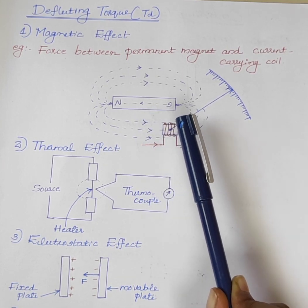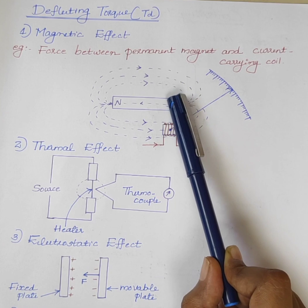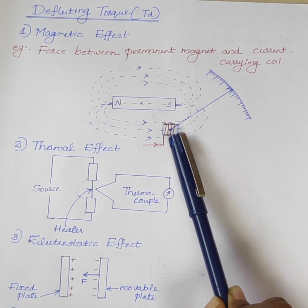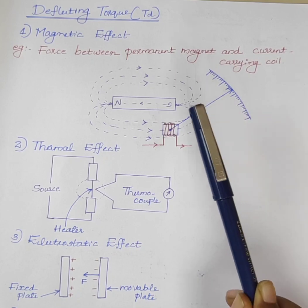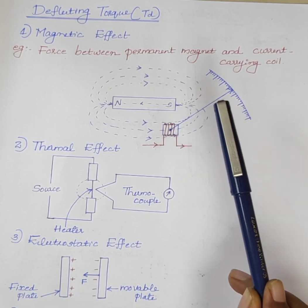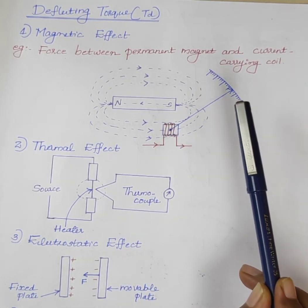There are three types: force between permanent magnet and current carrying coil, force between two current carrying coils, and force between current carrying coil and soft iron disc.